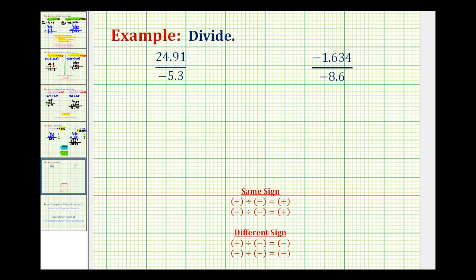Now we'll take a look at two examples of dividing signed decimals. Looking at our first example, remember a fraction bar means division, so we have a positive 24.91 divided by a negative 5.3. Well, a positive divided by a negative is negative, so this quotient will be negative. Let's go ahead and make a note of that. This is going to be equal to a negative value.